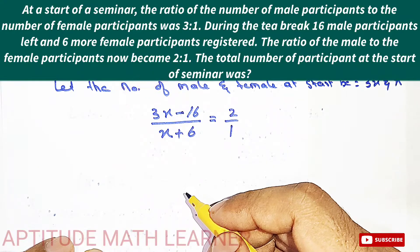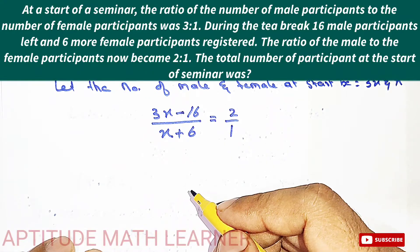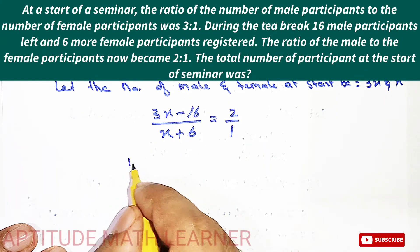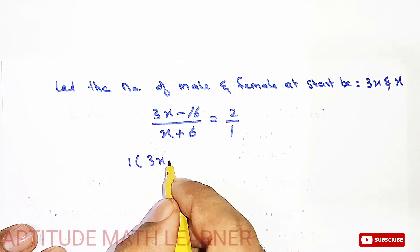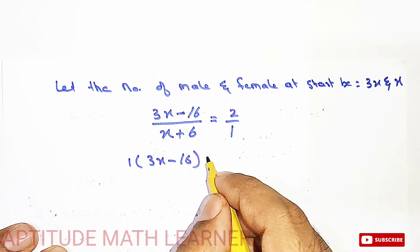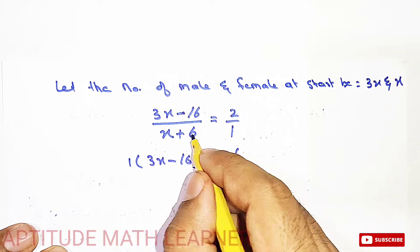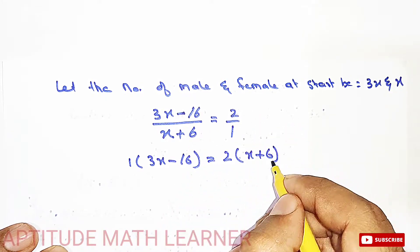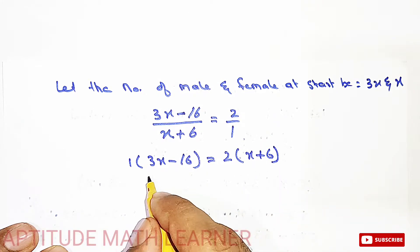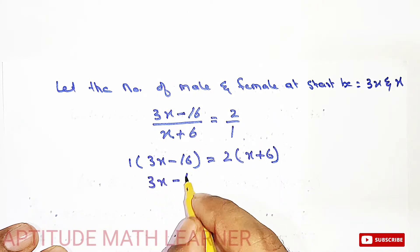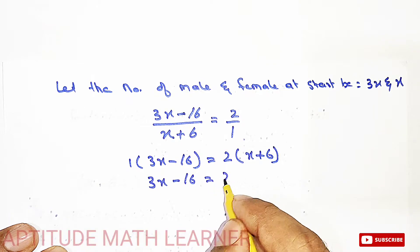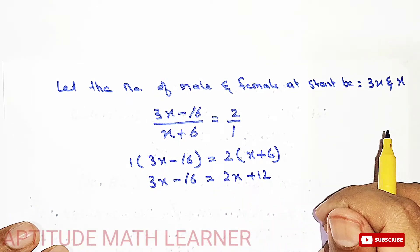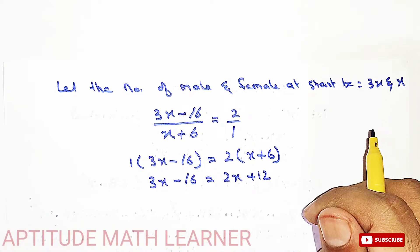Now we solve by cross multiplying. We get: 3x minus 16 equals 2 multiplied by x plus 6, which becomes 3x minus 16 equals 2x plus 12. I hope up to here you have completely understood.